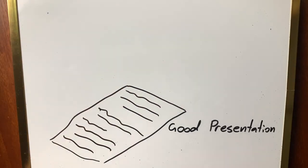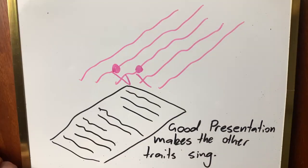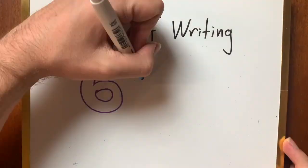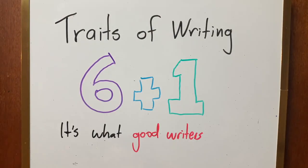Writing is about communication, and considering how you present your writing will ensure that the other traits sing, and that your writing is easy to read, easy to understand, and makes your reader want to read more. Traits of writing, 6 plus 1, it's what good writers do!